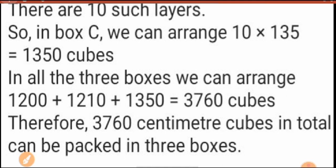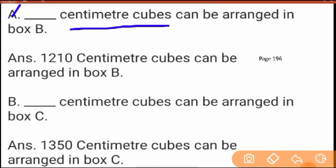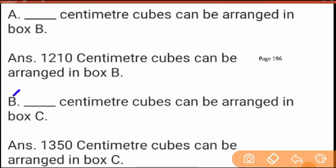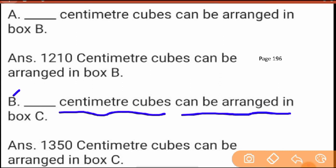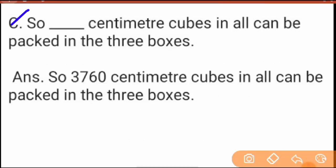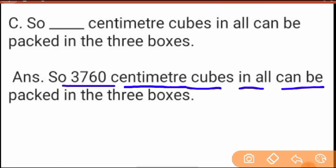Now fill in the blanks from the textbook. (a) How many centimeter cubes can be arranged in Box B? Answer: 1210 centimeter cubes. (b) How many in Box C? Answer: 1350 centimeter cubes. (c) How many centimeter cubes in all can be packed in the 3 boxes? Answer: 3760 centimeter cubes.